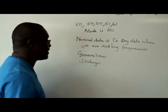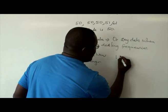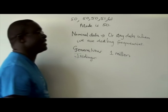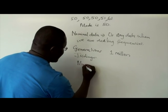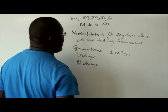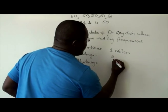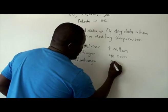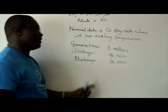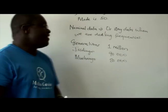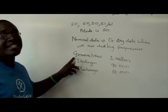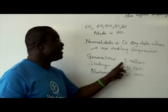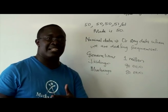Let's use Isidingo and Generations. Let's say one million people watch Generations on a daily basis, 90,000 people watch Isidingo daily, and 80,000 people watch Mufango daily. That means that Generations has got a higher TV rating than Isidingo and Mufango, because of the frequency of people watching the show.